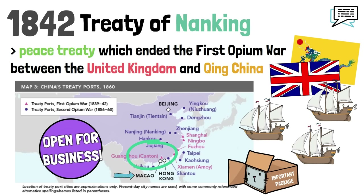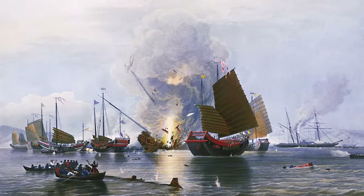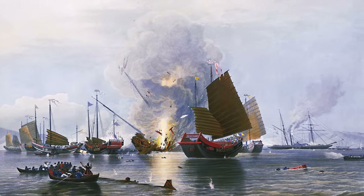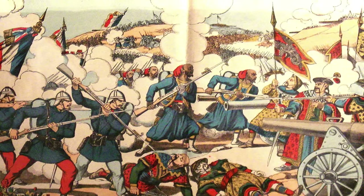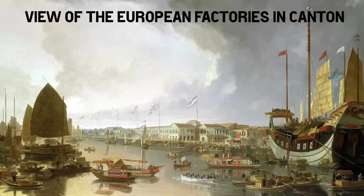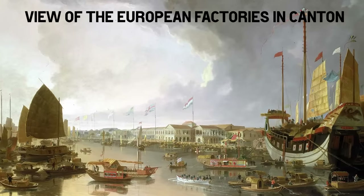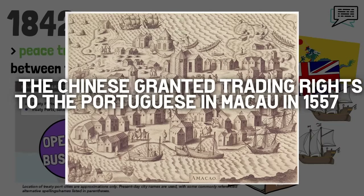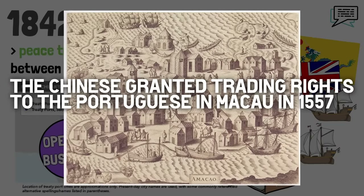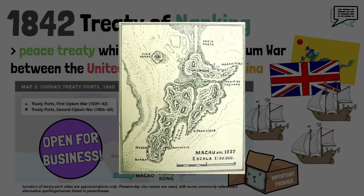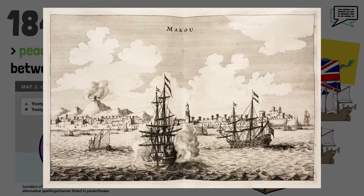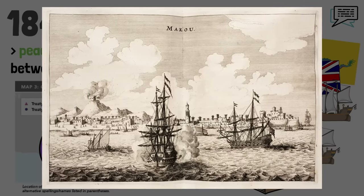The Treaty of Nanking was one of many unequal treaties between the Chinese and Western powers, as well as Japan, which often followed military defeats of the Chinese, forcing them to open up their economy to foreign trade but also their territory to foreign control. Although in some cases they seem to have done this out of their own will for economic or diplomatic gain. For instance, much earlier, in 1557, the Chinese leased Macau to Portugal. The Chinese still ruled it, and only in 1887 did it become a de facto colony of the Portuguese.